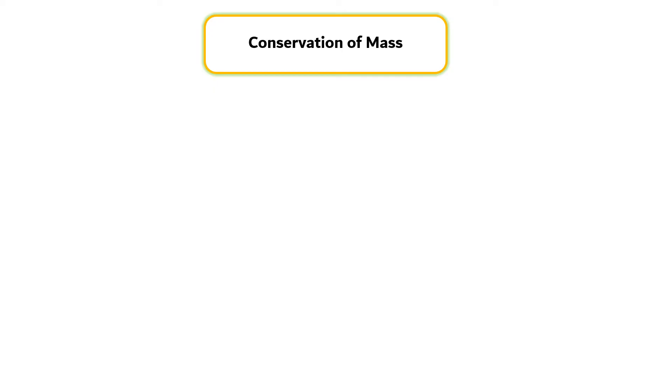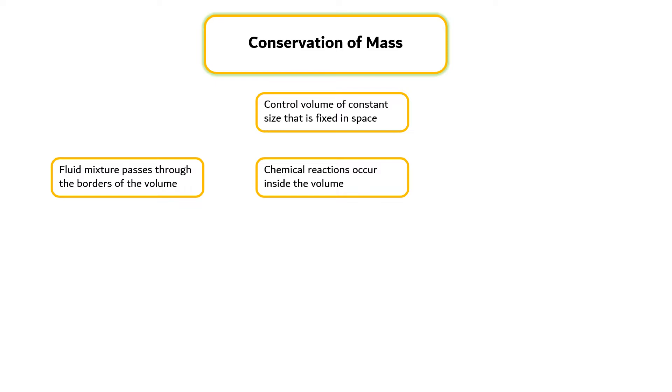Conservation of mass. Let's consider a control volume of constant size that is fixed in space. A fluid mixture passes through the borders of the volume. Within this volume, chemical reactions can occur.